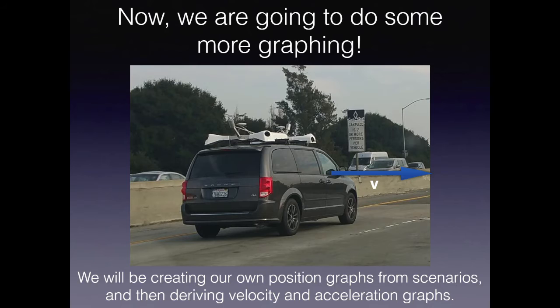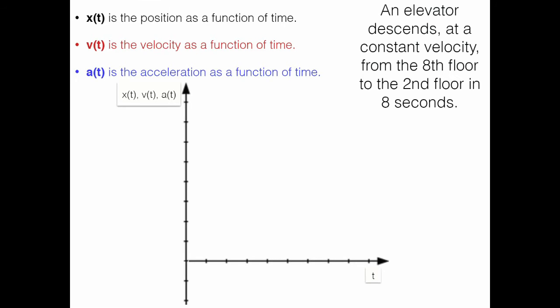Then, after that, we'll use the methods from last time to generate the velocity and acceleration graphs. So let's say you're on an elevator and it's on the eighth floor and it descends to the second floor in eight seconds. How can we use this grid to denote that information? Well, we know that the vertical axis is our position — it's the one-dimensional world we live in — so we can treat each tick mark as a floor.